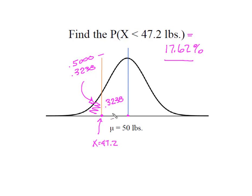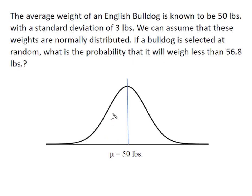Let's look at a value that falls above the mean. The weight of our English bulldogs is still known to be 50 pounds, standard deviation of 3 pounds, normally distributed. If a bulldog is selected at random, what's the probability that it will weigh less than 56.8 pounds?